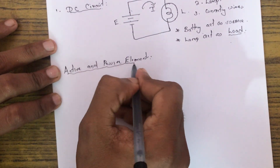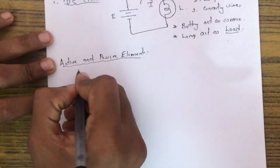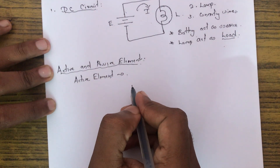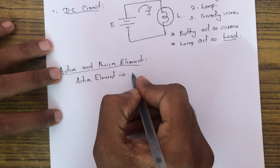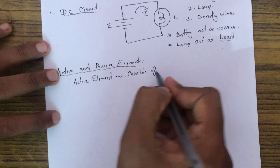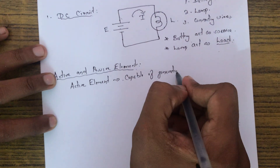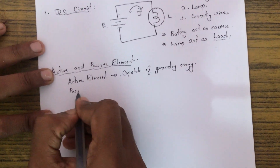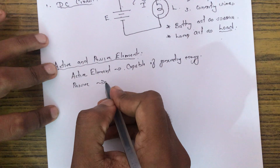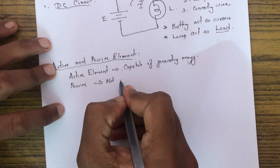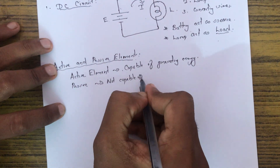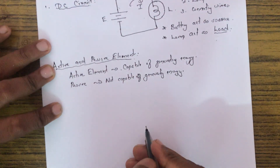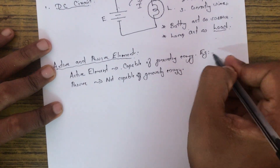Now let us look at active and passive elements. An active element is an element capable of generating energy. A passive element is an element not capable of generating energy.